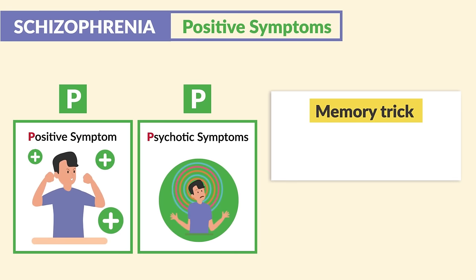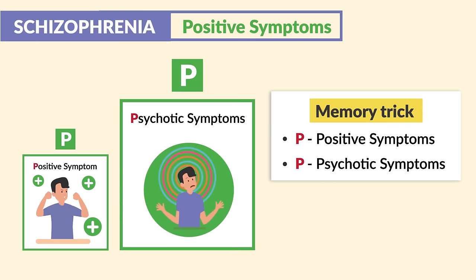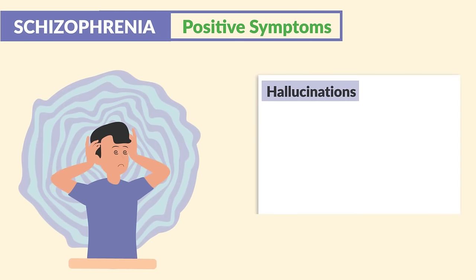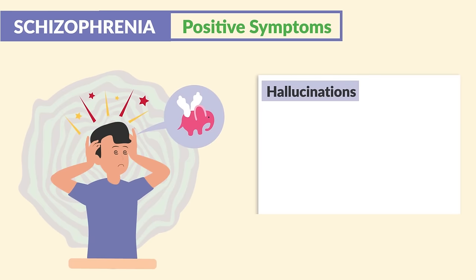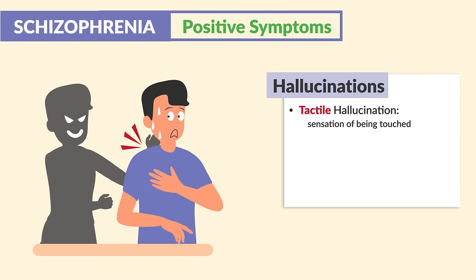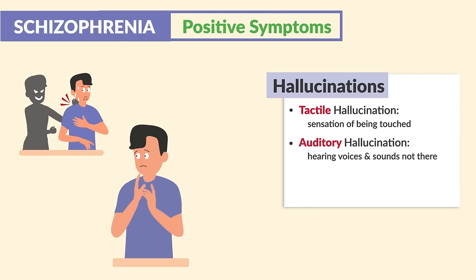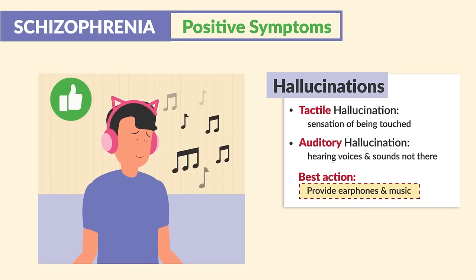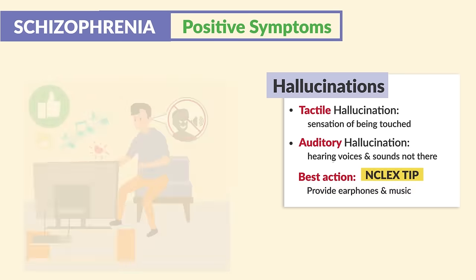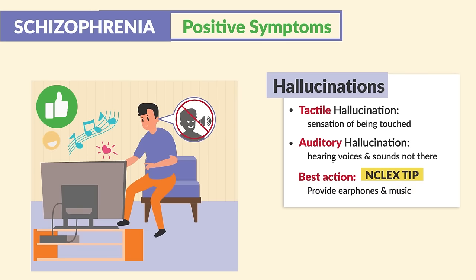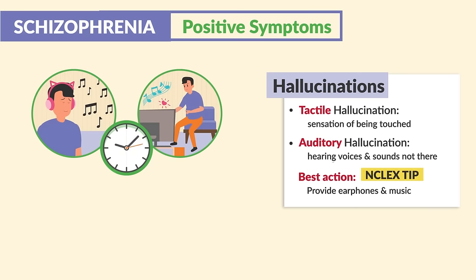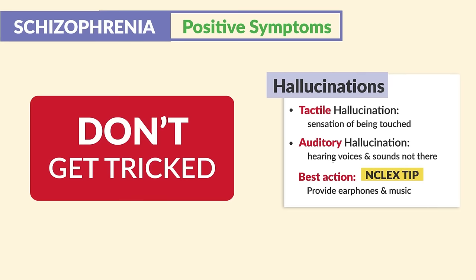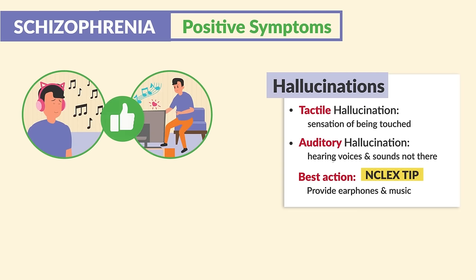First up is positive symptoms — think P for positive symptoms, P for psychotic symptoms. So hallucinations: this is where clients hear or see things that are not there, like voices in their head or seeing objects. There are also tactile hallucinations, where there's a sensation of being touched. For auditory hallucinations, the best action by staff is to provide earphones and music — huge NCLEX tip. Or even watching TV, which makes it easier to ignore the internal sounds, as it can take a while for antipsychotic medications to kick in.